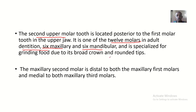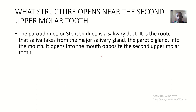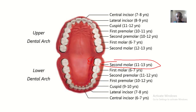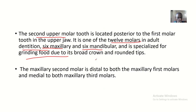It is also specialized for grinding food due to its broad crown. It is broad, so it is specialized for grinding food — working with other teeth to process and grind food.